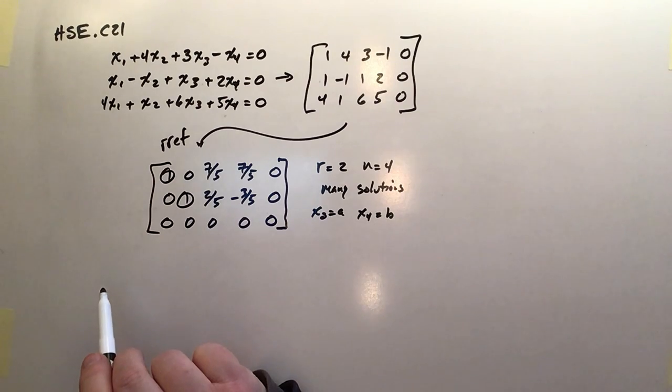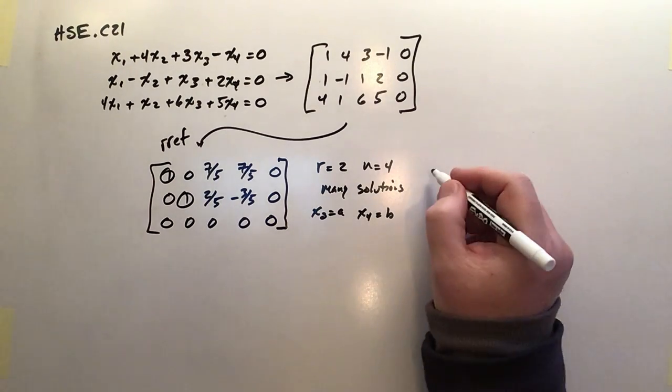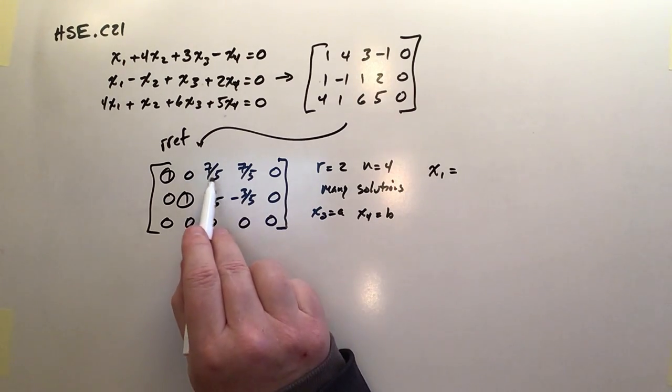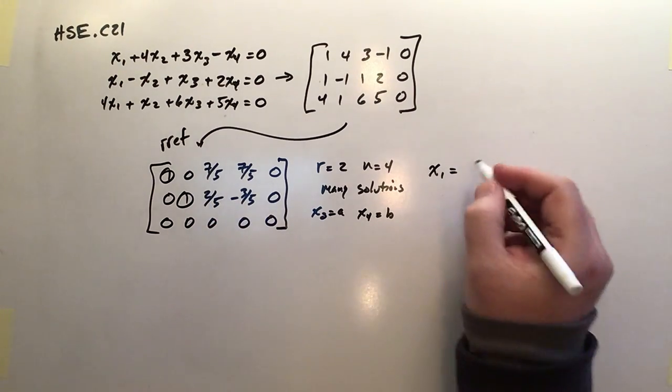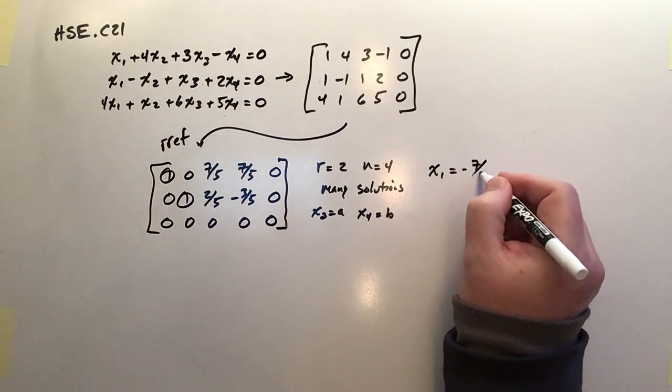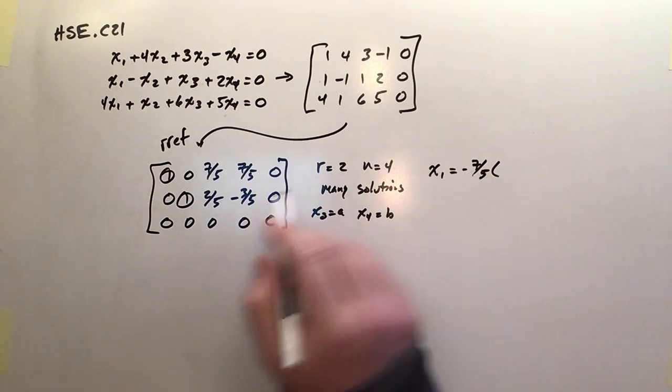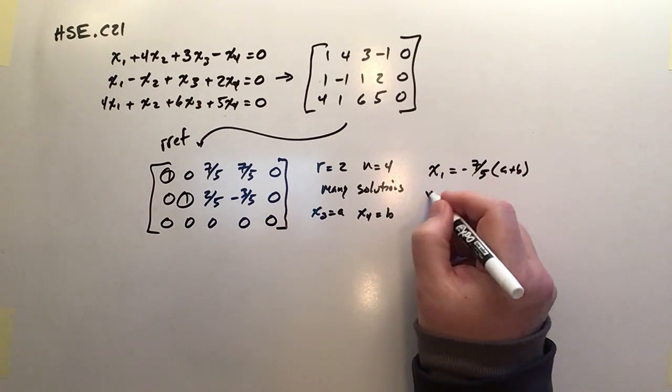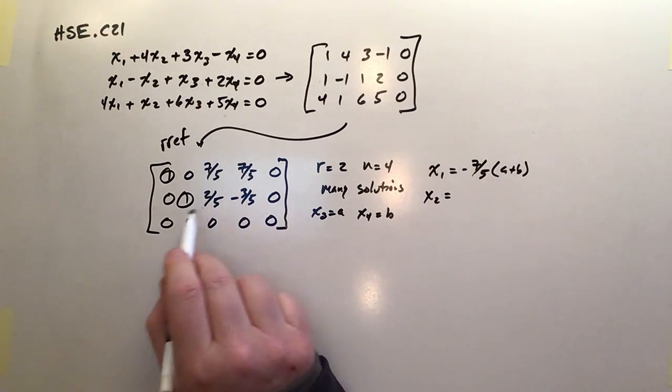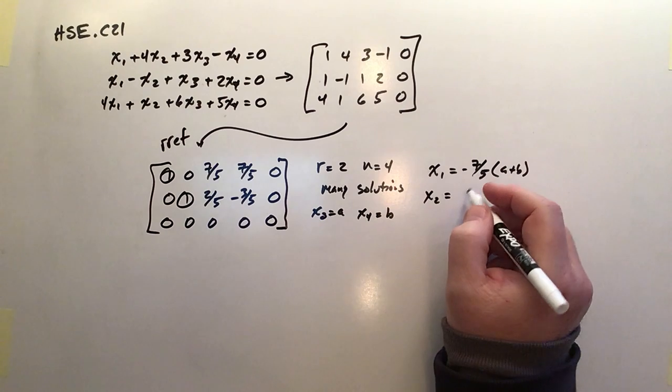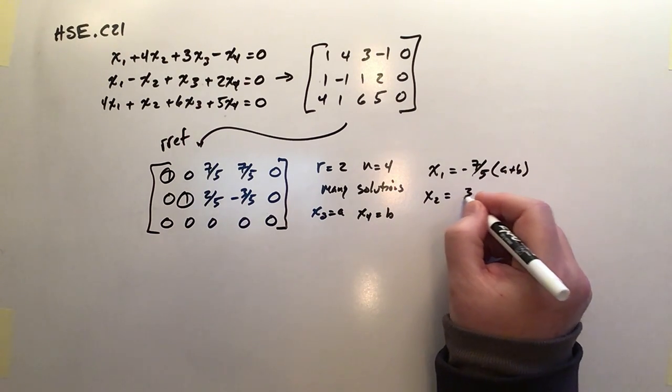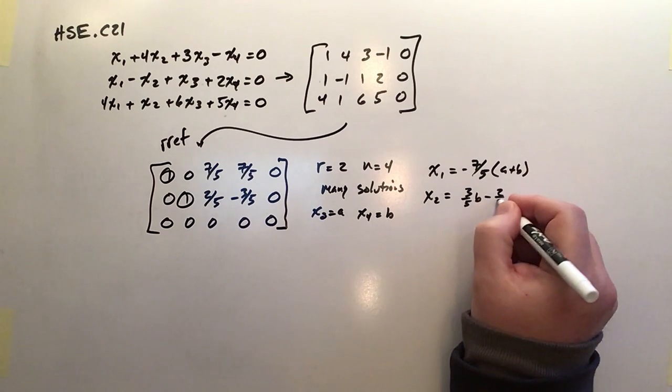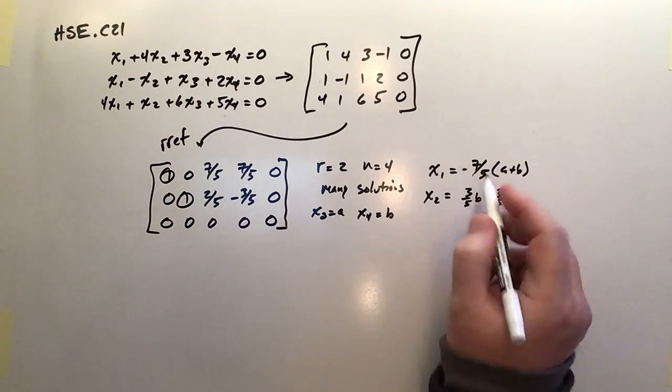But x1 and x2 are going to have limitations on them. So let's write their equations. x1 is going to have to be equal to, well, once I bring these guys over to the other side, it's going to be negative seven-fifths times the sum of a and b. So a plus b. And then finally, x2 is similarly defined. It's going to be three-fifths of b minus two-fifths of a. And then that's it.